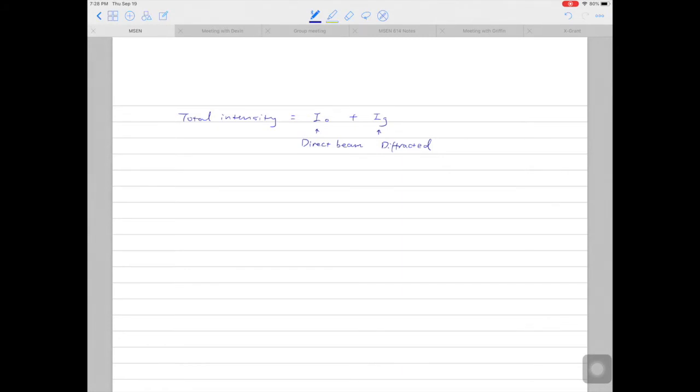The magnitude of IG can be written as the absolute value of phi G square. Phi here denotes the amplitude.